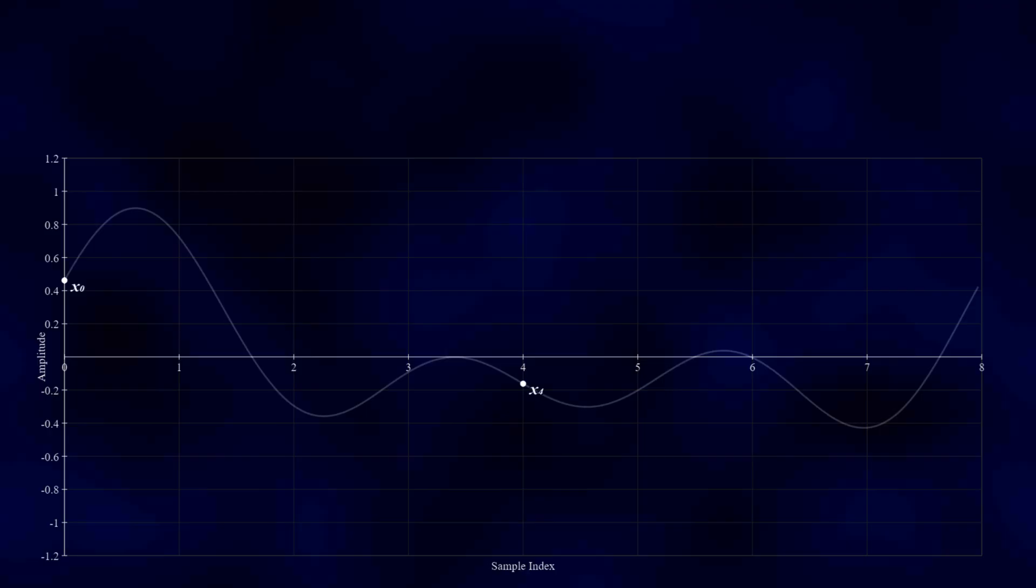But take a look at the amplitudes of these points on a cosine wave. When the cosine wave's frequency is zero, both points have an amplitude of 1. This means that when we multiply them by the corresponding signal samples, we are simply multiplying by 1, leaving their values unchanged.